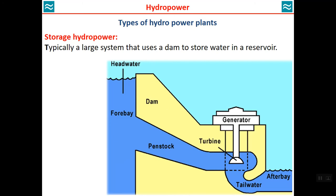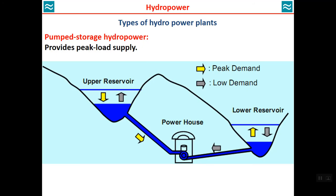The simplest type of hydropower plant is the storage hydropower plant, which is the most common. As you can see in the slide, there is a large dam, and water is directed through a forebay and penstock to the turbine, which is connected to a generator to produce power.